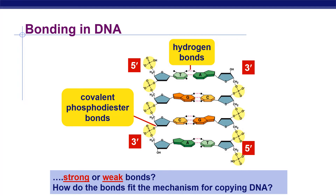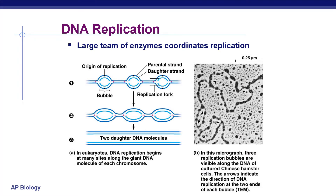DNA replication involves a large team of enzymes and is divided into three steps: initiation, elongation, and termination. Initiation is the preparatory step involving replication fork formation. Elongation is where DNA synthesis begins, including primer binding, synthesis of leading and lagging strands, primer removal, gap filling, and proofreading. Termination is the step where the end of replication takes place and the two daughter DNA molecules are formed.